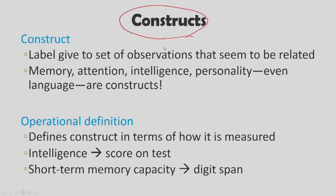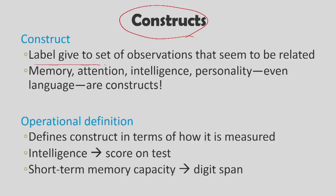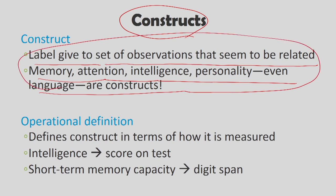Constructs are another interesting thing in research. A construct provides a scientist with a useful way of thinking about the world — it is a label given to a set of observations that seem to be related. Constructs are formats in which scientists are able to conceptualize or think about phenomena in the external world. Memory, attention, intelligence, personality, and even language are constructs — phenomena which, when understood through a certain process, become a construct.